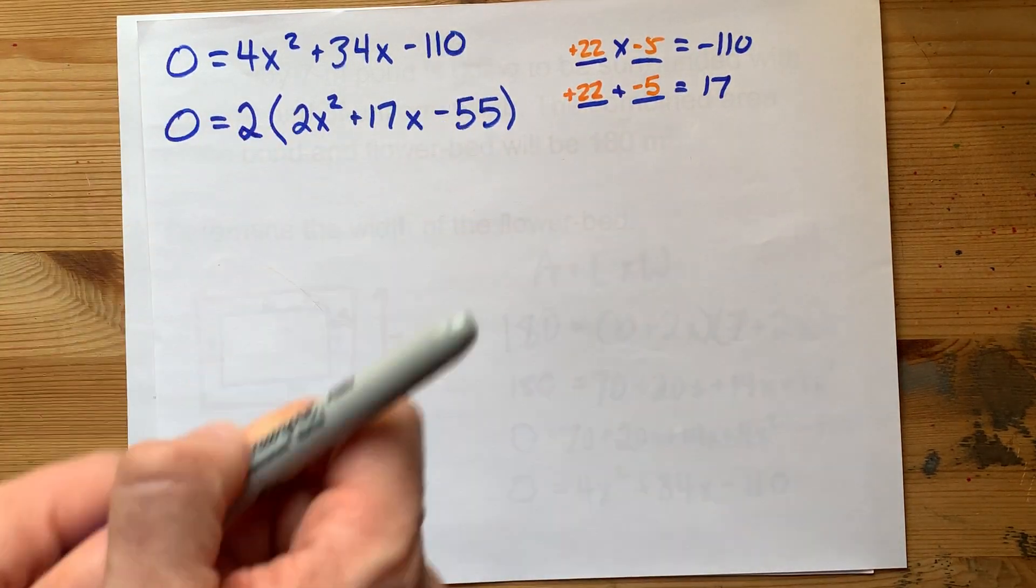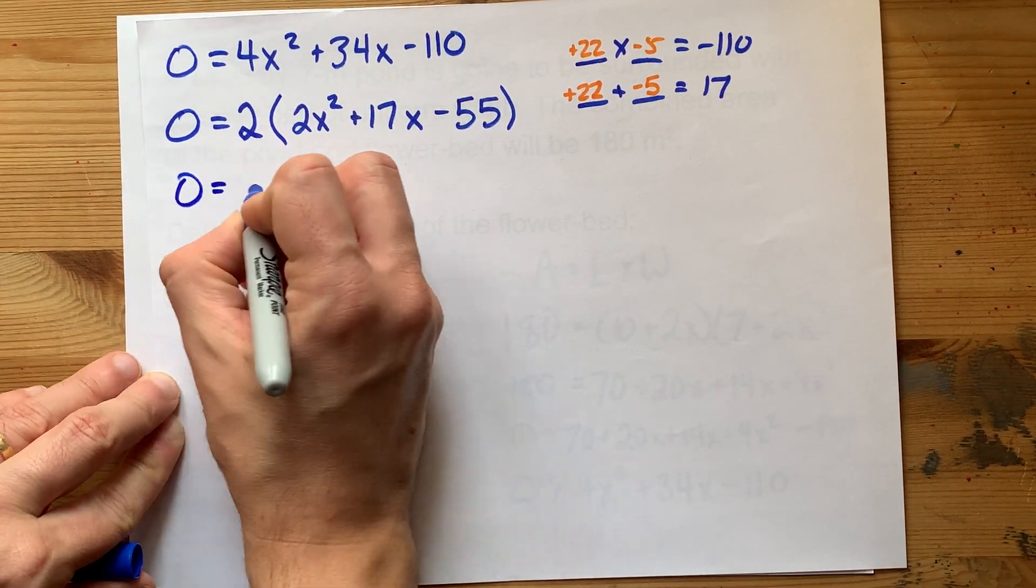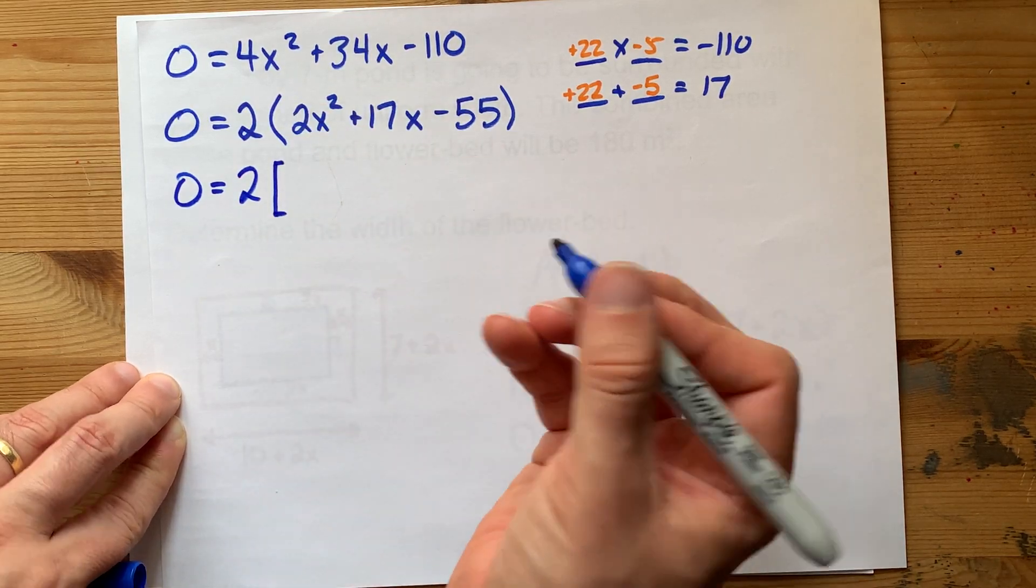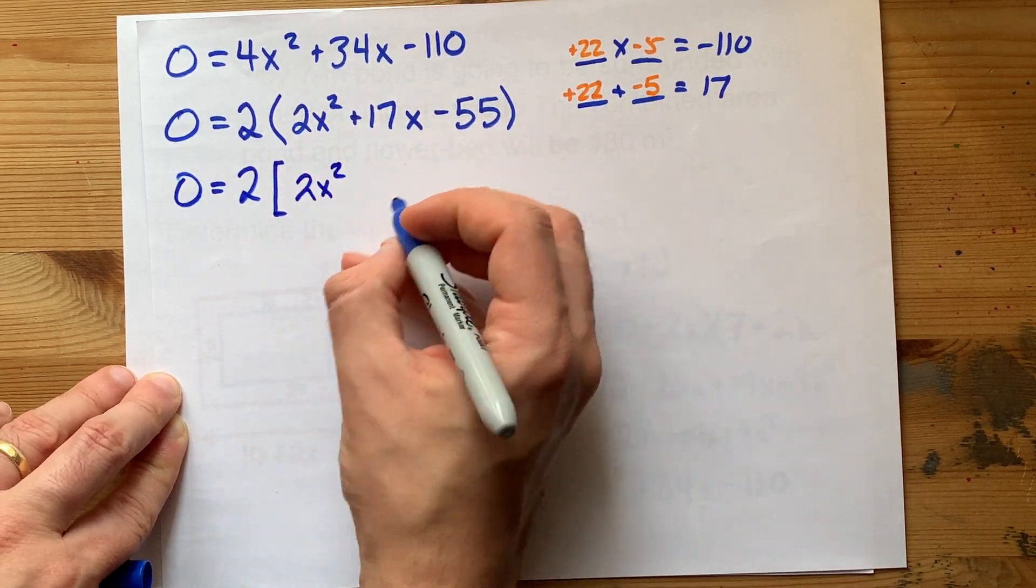Now I'm going to decompose the middle term. This is how you factor when the leading coefficient isn't 1 and you have a shortcut, that is. That's 2x squared here.